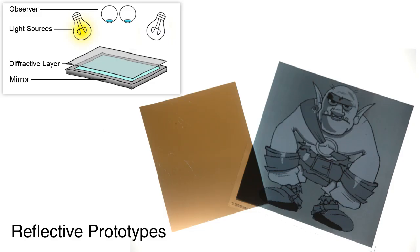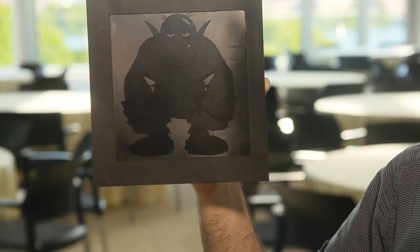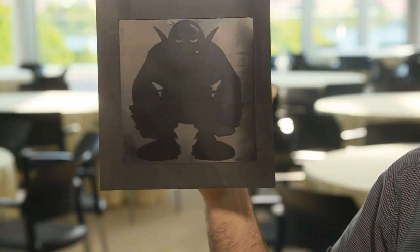We also demonstrate reflective prototypes that use a single transparency mounted at a small distance on a mirror. Non-symmetric BRDFs can be generated this way, as photographed in a tank of fluorescent water. This is impossible for single-layer BRDF displays. Here we see reflective prototypes in natural lighting conditions.